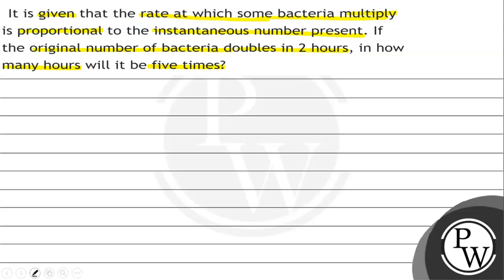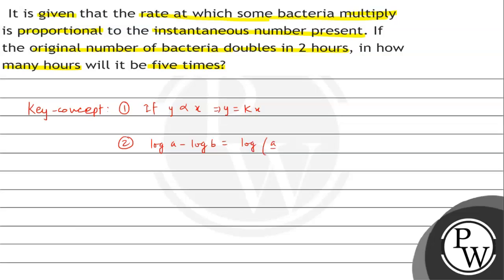This is a very simple question. Let's read the key concepts. If y is proportional to x, then y equals kx. Second, log A minus log B can be written as log A upon B.